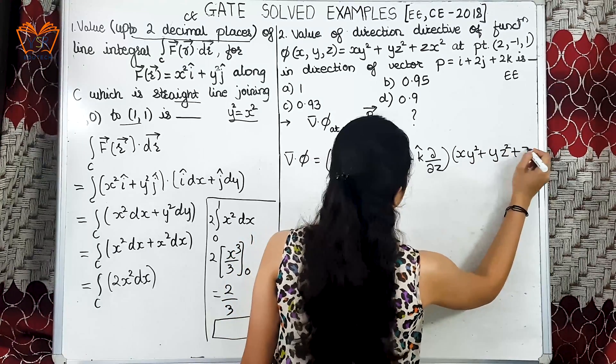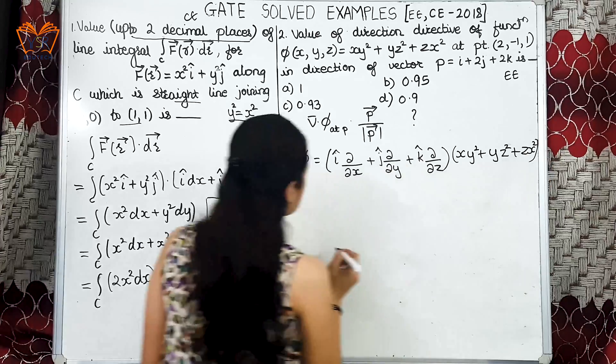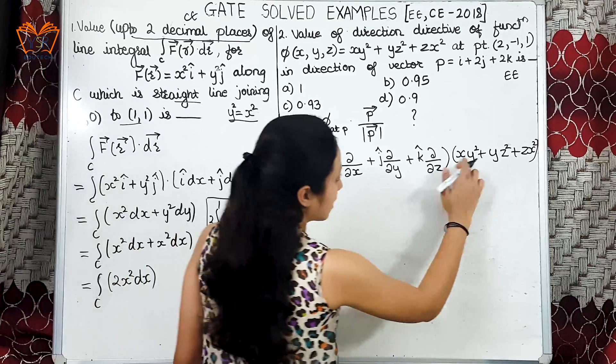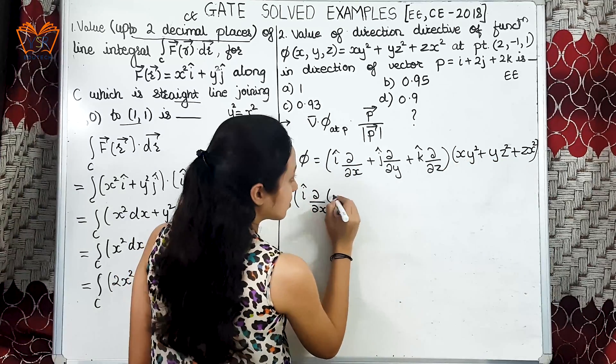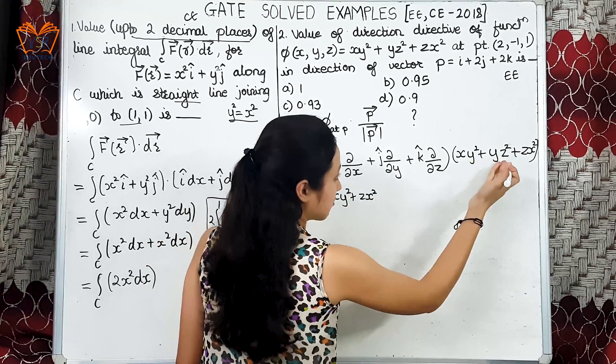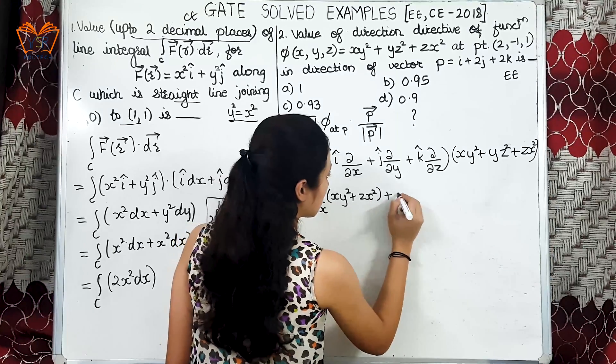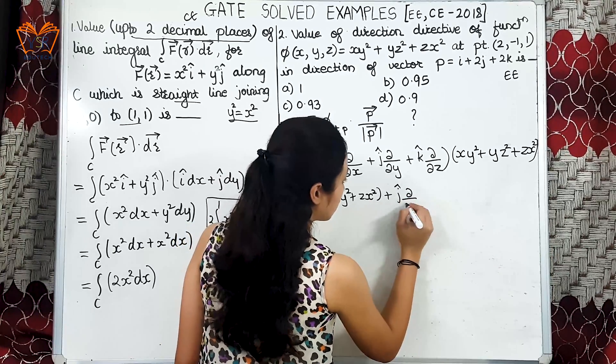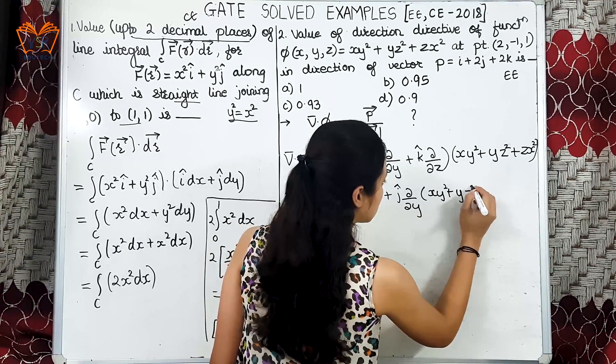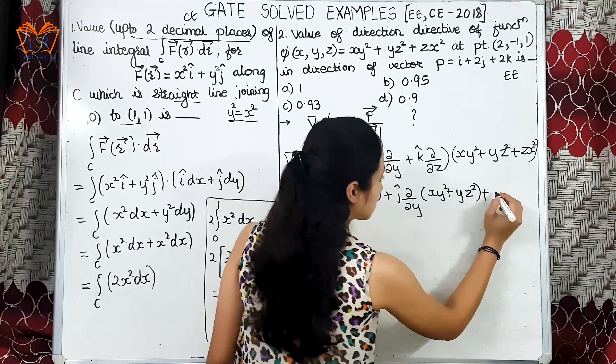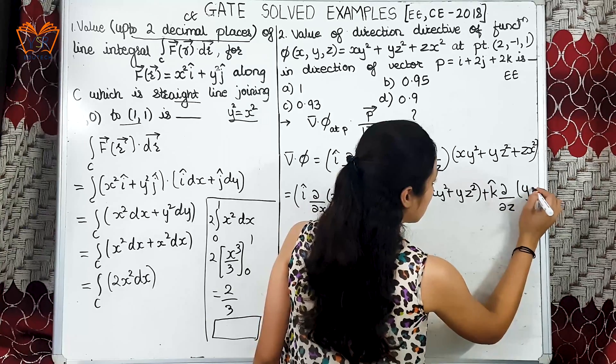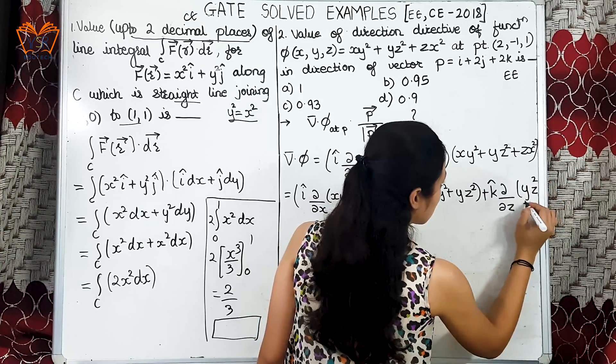Let us multiply this. We get i cap del by del x of, let us write the terms, xy square plus zx square, because derivative of second term will be 0. Plus j cap del by del y of xy square plus the second term yz square, plus k cap del by del z of the last two terms, yz square plus zx square.